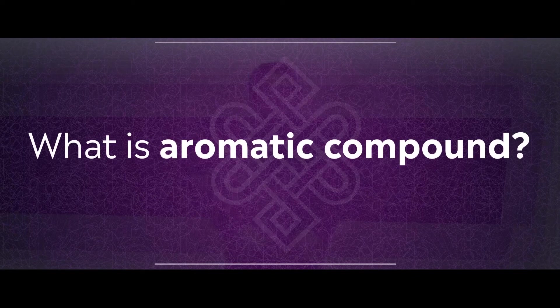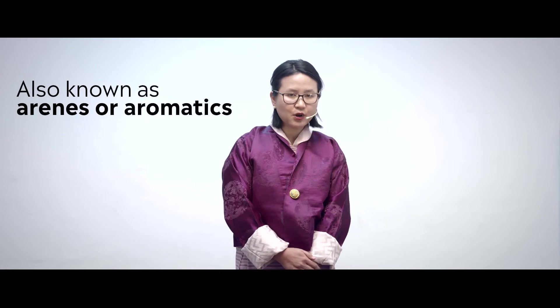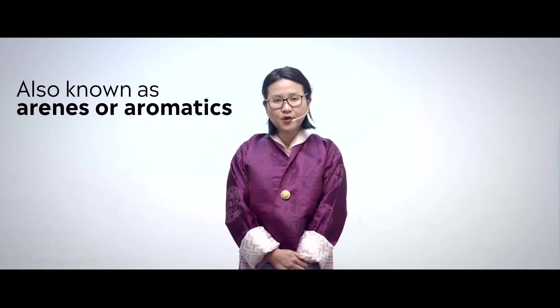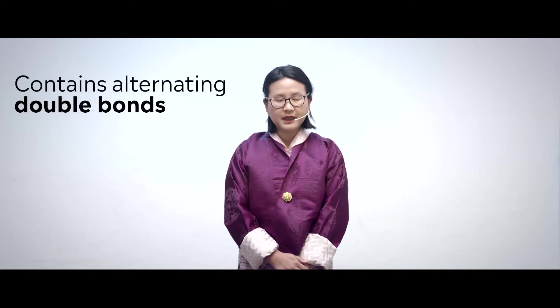What is an aromatic compound? Aromatic compounds are also known as arenes, or sometimes they are known as aromatics. What is so special about aromatic compounds? Aromatic compounds have alternating double bonds. They have six carbons and they have alternating double bonds.